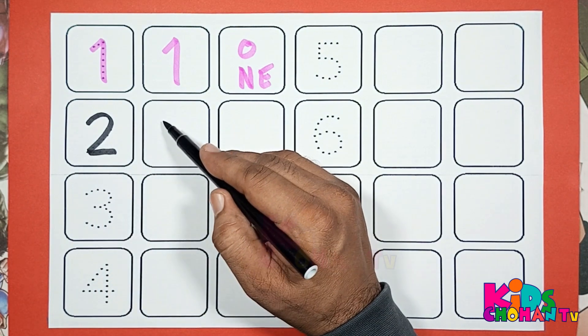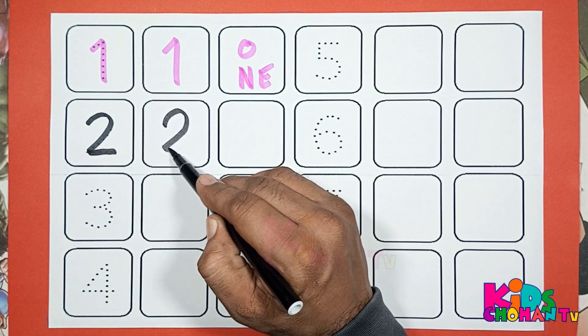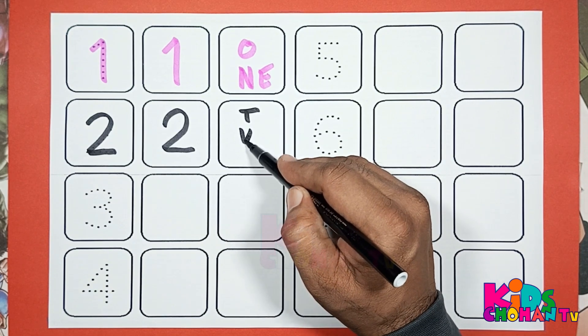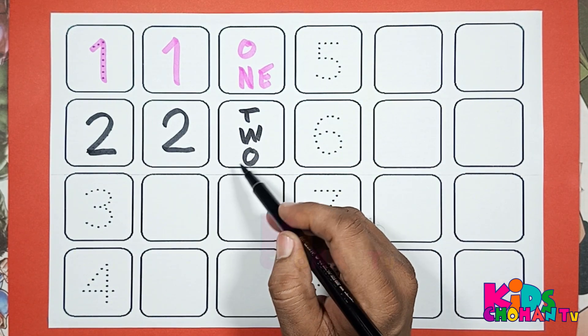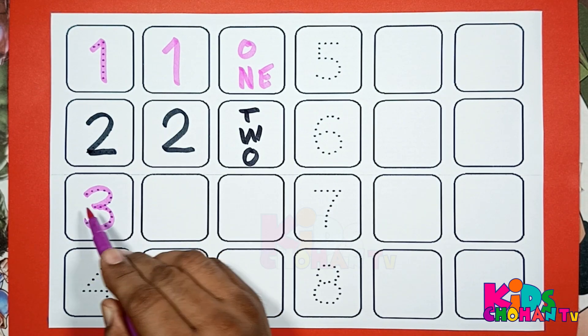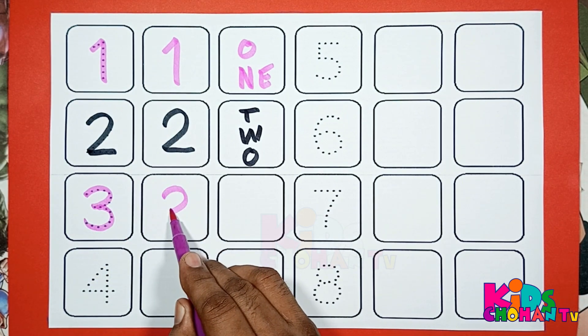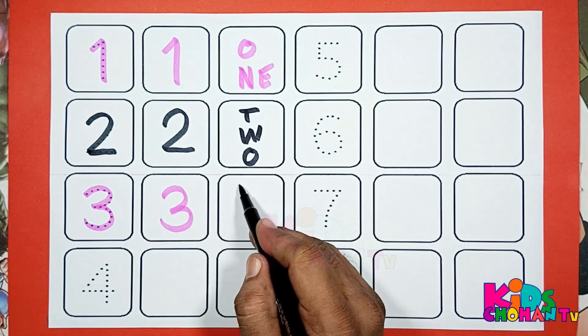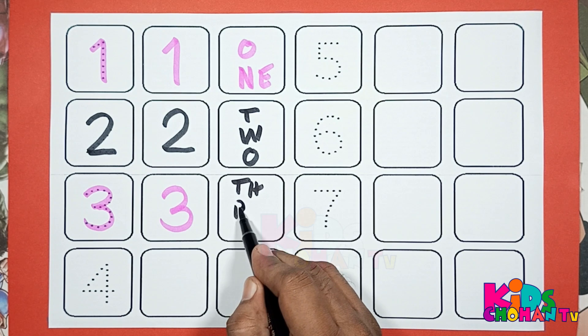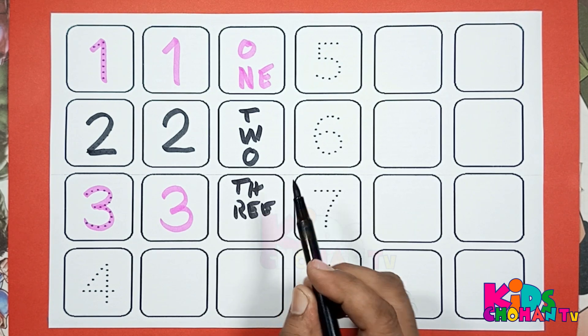2. This is number 2. 2, T, W, O, 2. 3. This is number 3. 3, T, H, R, E, E, 3.